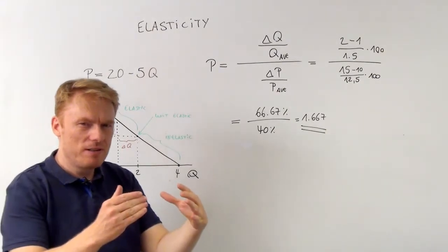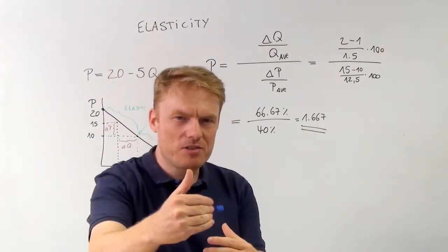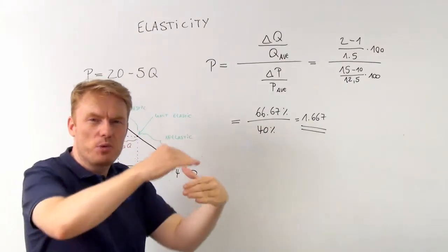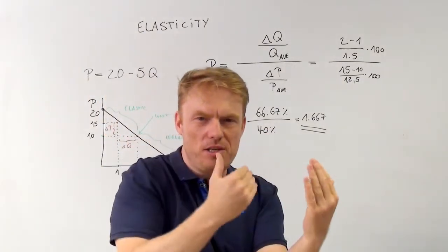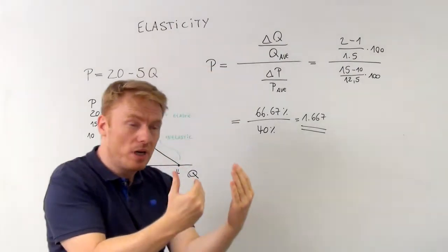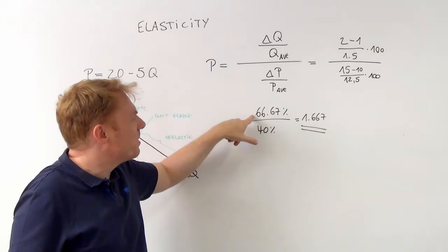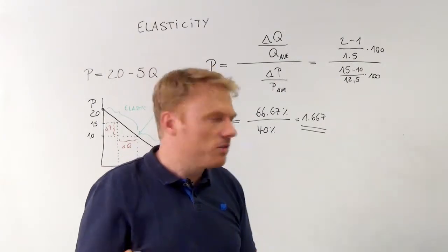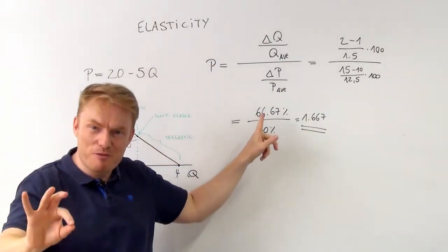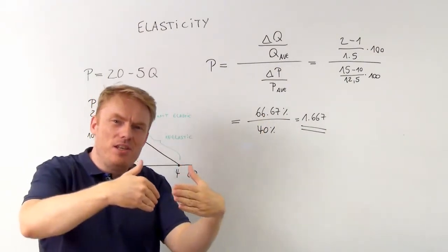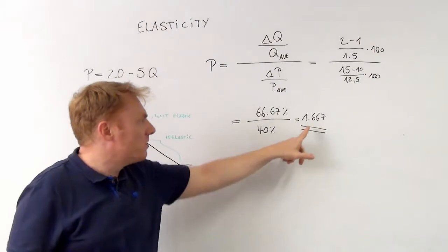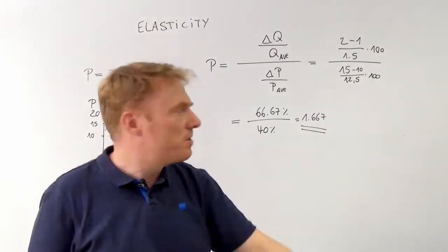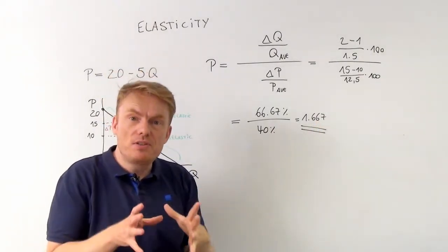The absolute reduction divided by the average price gives the relative reduction: the price goes down by 40%. If the price goes down by 40%, the quantity demanded goes up by 66.67%. A relative change in quantity demanded of 66.67% divided by the relative price change of 40% equals the price elasticity of demand of 1.667.